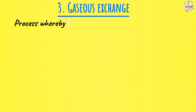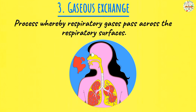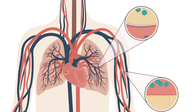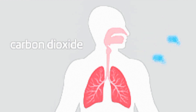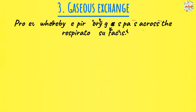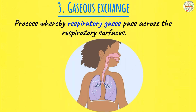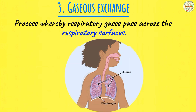Our third characteristic is gaseous exchange. Gaseous exchange is a process whereby you are going to have exchange of gases between an organism and its surroundings. There are two gases that are involved: oxygen and carbon dioxide. These gases are called respiratory gases. Gaseous exchange is defined as the process by which respiratory gases, specifically oxygen and carbon dioxide, pass across the respiratory surfaces. Respiratory surfaces are the surfaces in the body of an organism where the exchange of gases takes place.